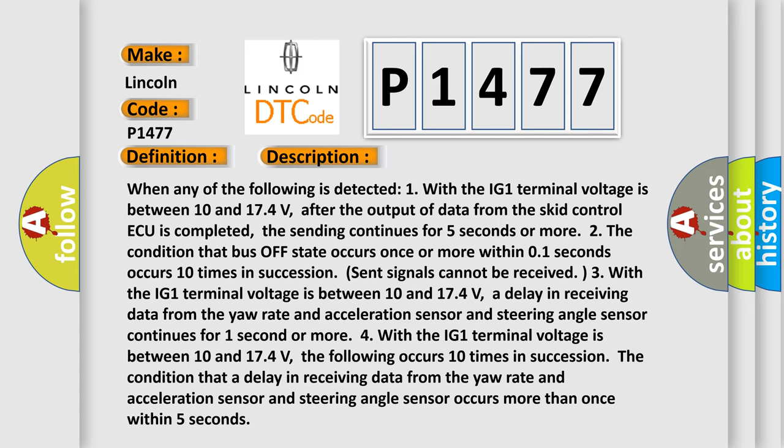Four, with the IG1 terminal voltage between 10 and 17.4 volts, the following occurs 10 times in succession: The condition that a delay in receiving data from the yaw rate and acceleration sensor and steering angle sensor occurs more than once within five seconds.